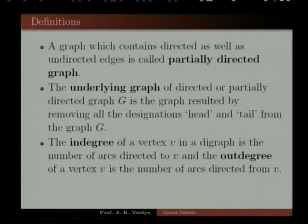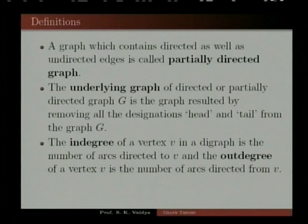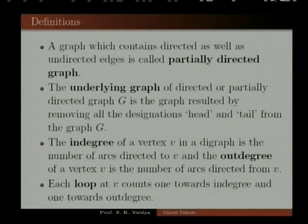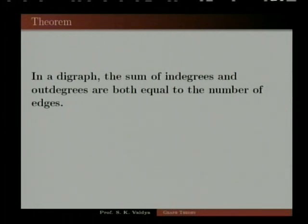The in-degree of a vertex V in a digraph is the number of arcs directed to V, and the out-degree of a vertex V is the number of arcs directed from V. Each loop at V counts one towards in-degree and one towards out-degree. In a digraph, the sum of in-degrees and the sum of out-degrees are both equal to the number of edges.